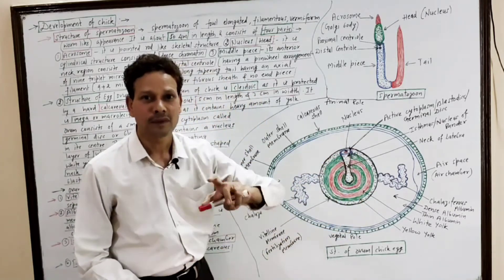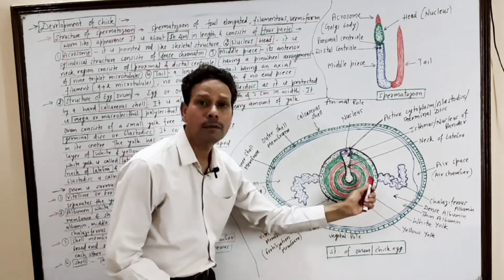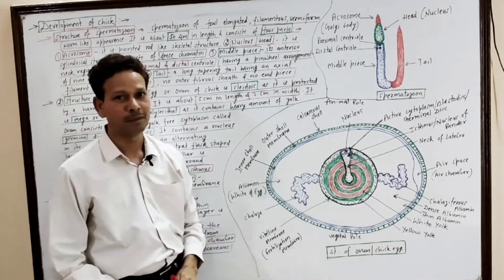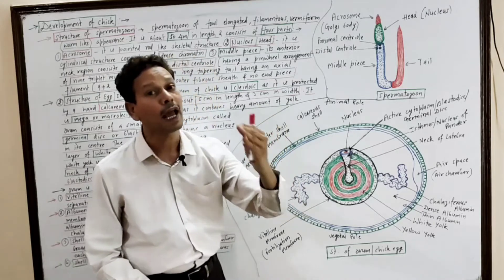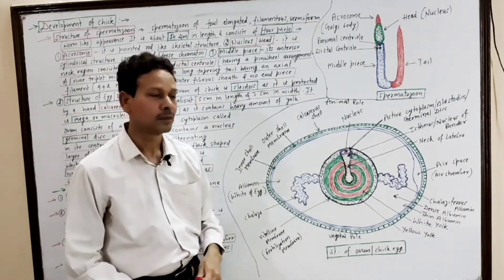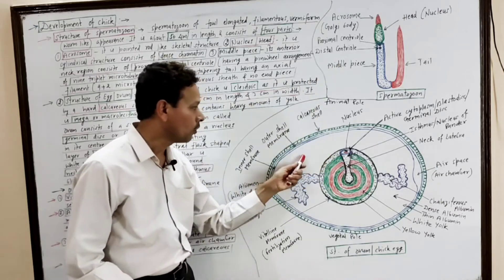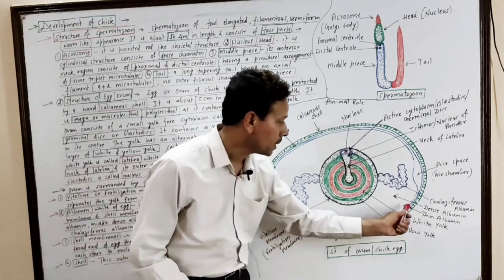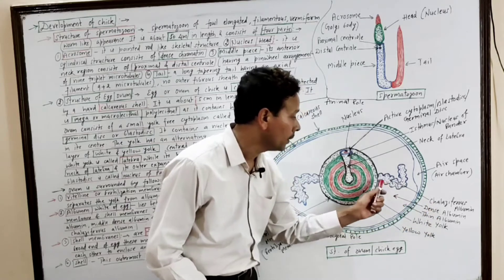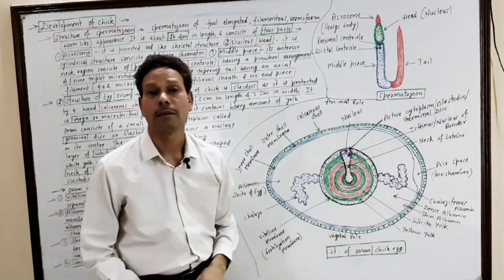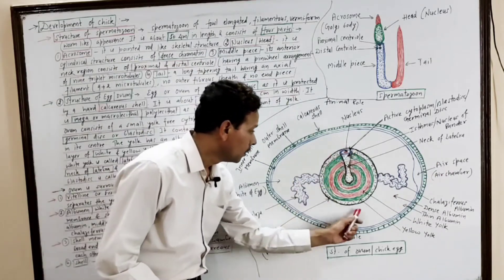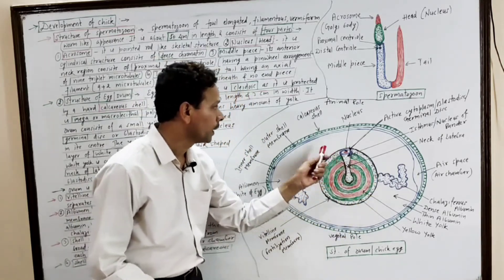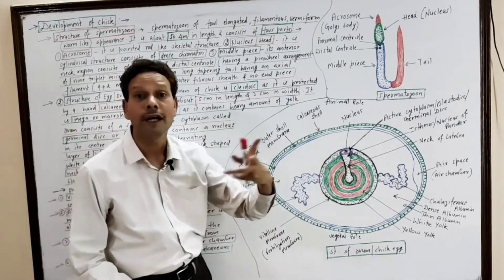The albumin is lined by another envelope — the vitelline membrane, also named the fertilization membrane. So in case of the chick egg, four envelopes are present: the shell, two shell membranes, the white of egg (albumin having three parts — outer thin, middle dense, and innermost chalaziferous albumin), and the innermost vitelline membrane or fertilization membrane.